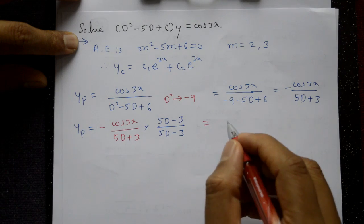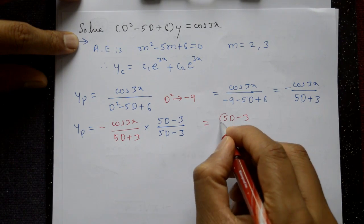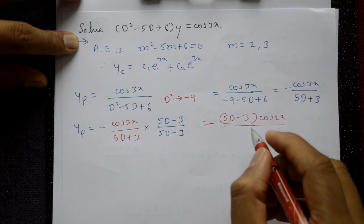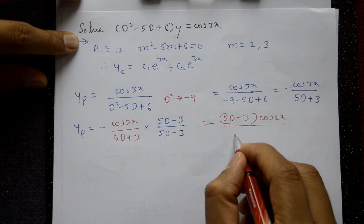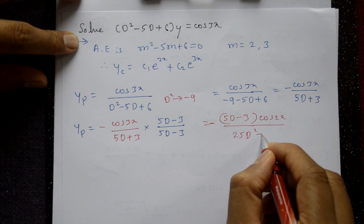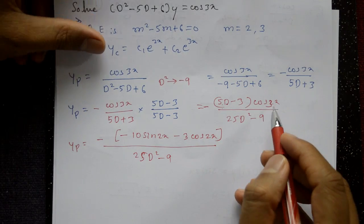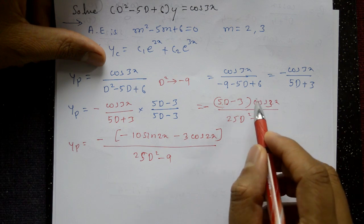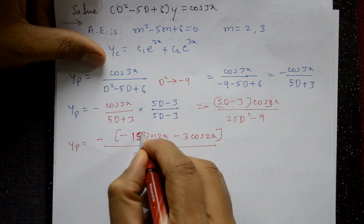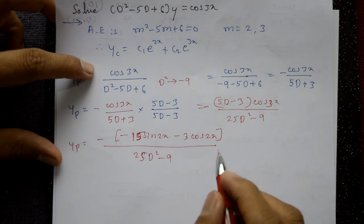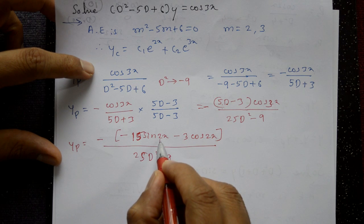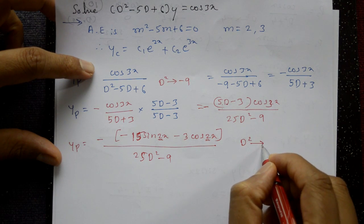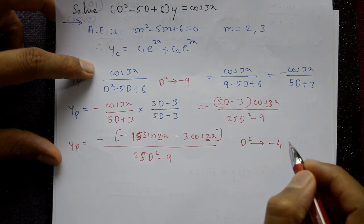This gives (5D − 3)cos3x in the numerator. Differentiating cos3x: D·cos3x = −3sin3x, so 5D·cos3x = −15sin3x. For sin3x and cos3x, a = 3, so D² = −9. The denominator becomes 25D² − 9 = 25(−9) − 9.